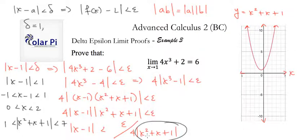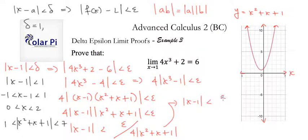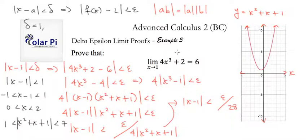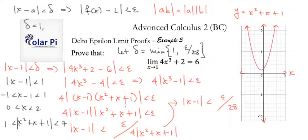So this guy — absolute value of x squared plus x plus 1 — is less than 7. We can translate the statement to read absolute value of x minus 1 is less than epsilon divided by 4 times 7, which is epsilon over 28. So here we're done with our proof. We'll say let delta equal the minimum of 1 or epsilon over 28. If epsilon is very small, then epsilon over 28 as delta will do better — when epsilon over 28 is smaller than 1, we'll pick it.